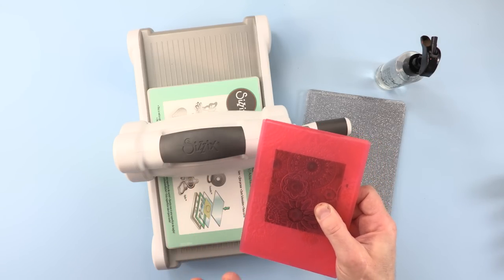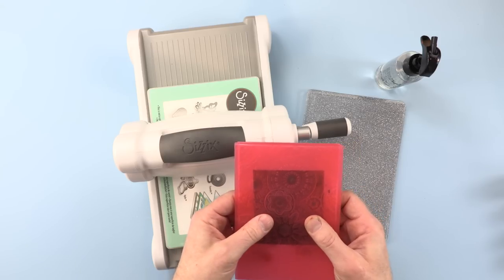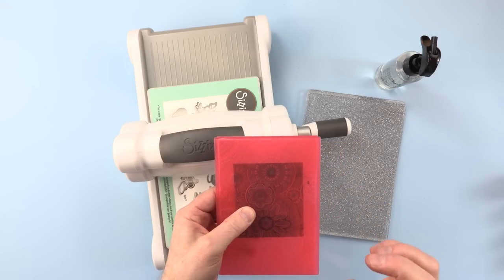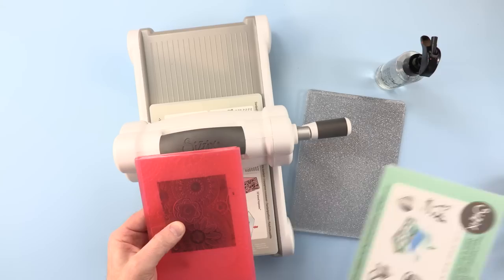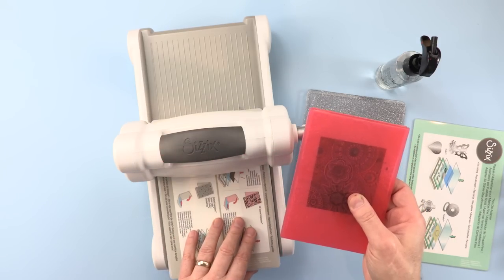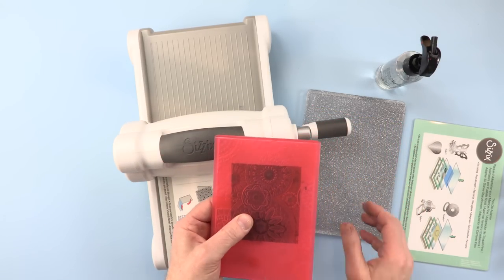What this does is it allows the fibers of the card to stretch so that with 3D obviously when the pressure is applied with your machine, it comes under a lot of pressure and it can split those fibers. When you spritz it and let the water soak in, you get a really clean emboss every time. Not only that, when it sets, it sets rock hard, which is really cool.